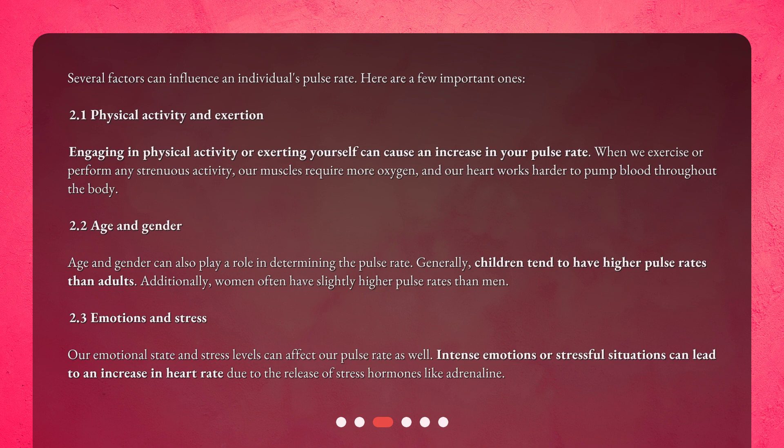Age and gender can also play a role in determining the pulse rate. Generally, children tend to have higher pulse rates than adults. Additionally, women often have slightly higher pulse rates than men. Our emotional state and stress levels can affect our pulse rate as well. Intense emotions or stressful situations can lead to an increase in heart rate due to the release of stress hormones like adrenaline.